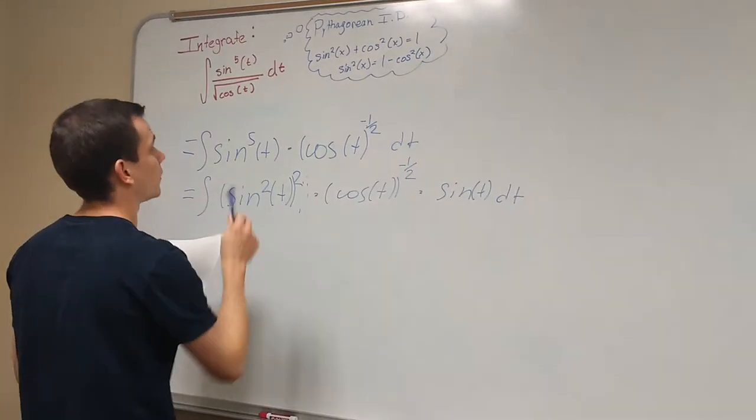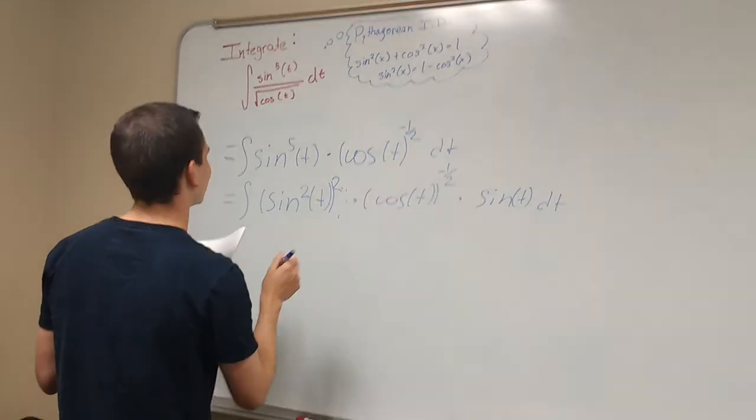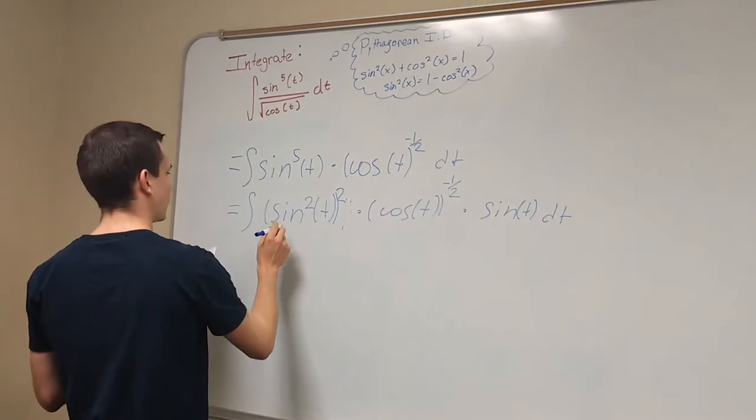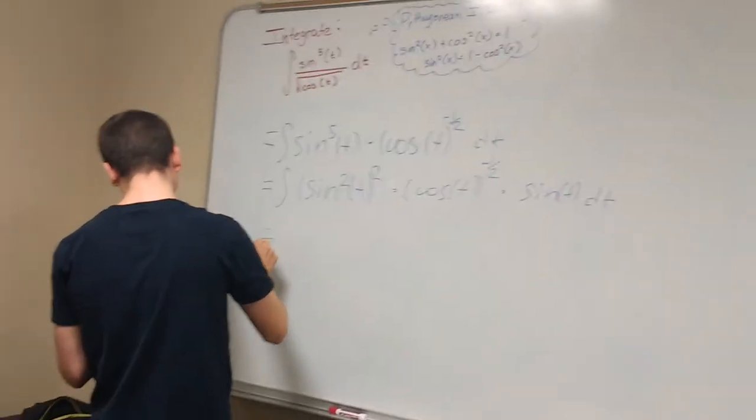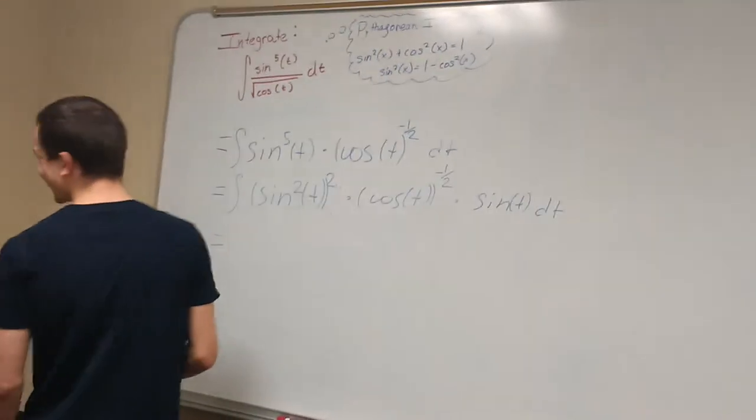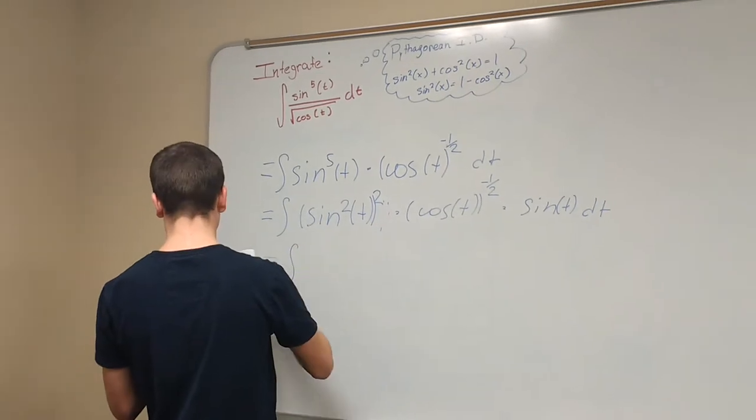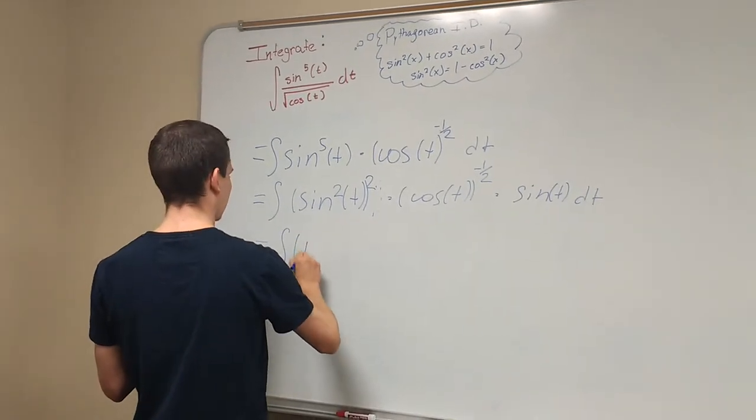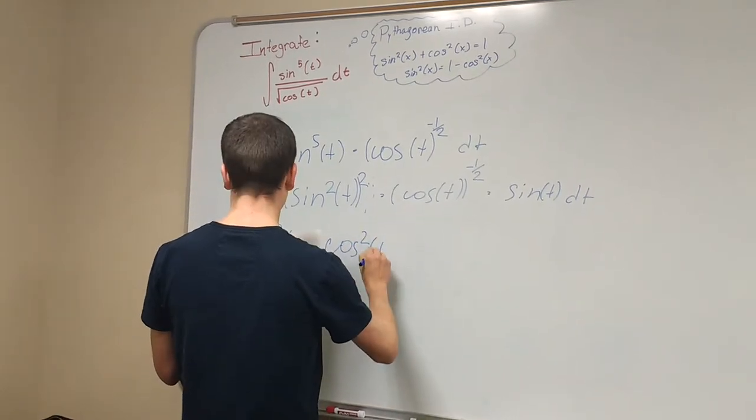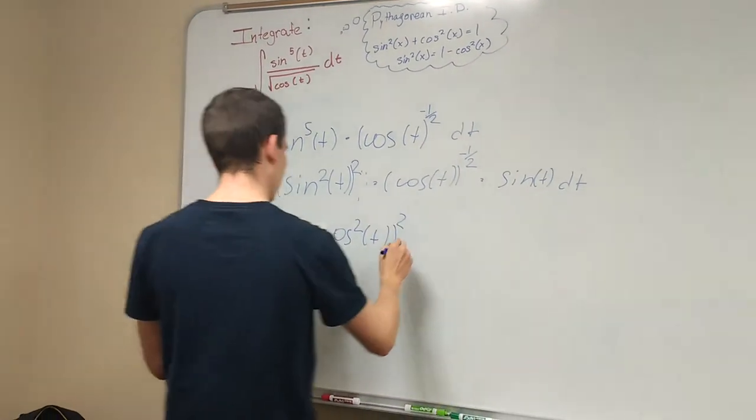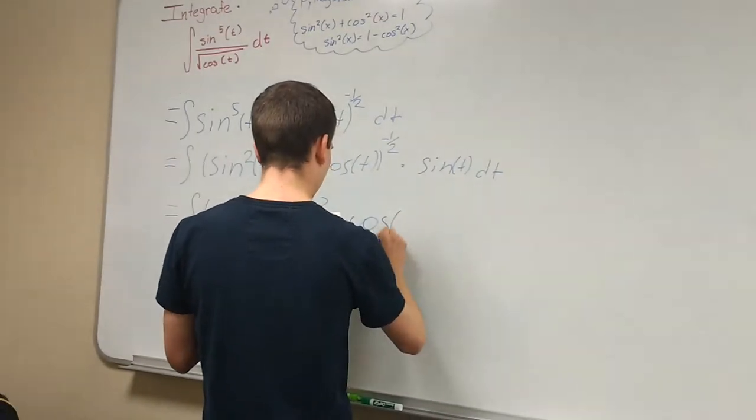By this theorem we can see that sine squared equals to one minus cosine squared t. Alright, so the substitution of that theorem would be the integral of one minus cosine squared t, the whole thing squared, multiplied by cosine of t.